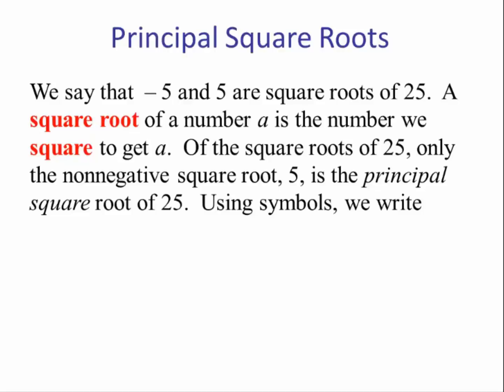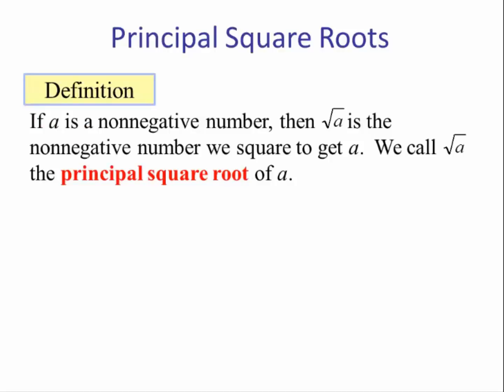In symbols we write this symbol, which is the radical square root sign. So this is the square root of 25, and that equals 5. Definition: if a is a non-negative number, then the square root of a is the non-negative number we square to get a. We call the square root of a the principal square root of a.